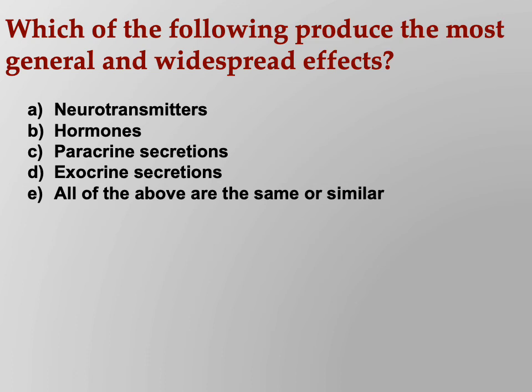Which of the following produce the most general and widespread effects? Would that be A, neurotransmitters; B, hormones; C, paracrine secretions; D, exocrine secretions; or E, all of the above are the same or similar? The answer is hormones — long distance, affecting the entire body.